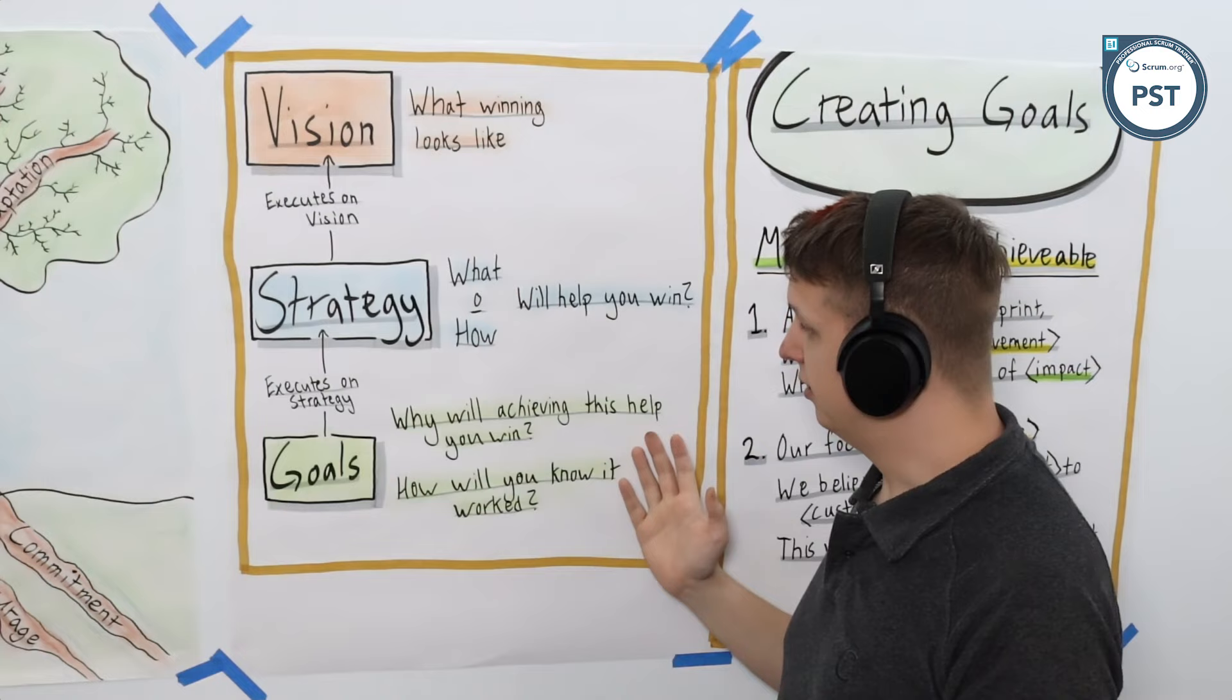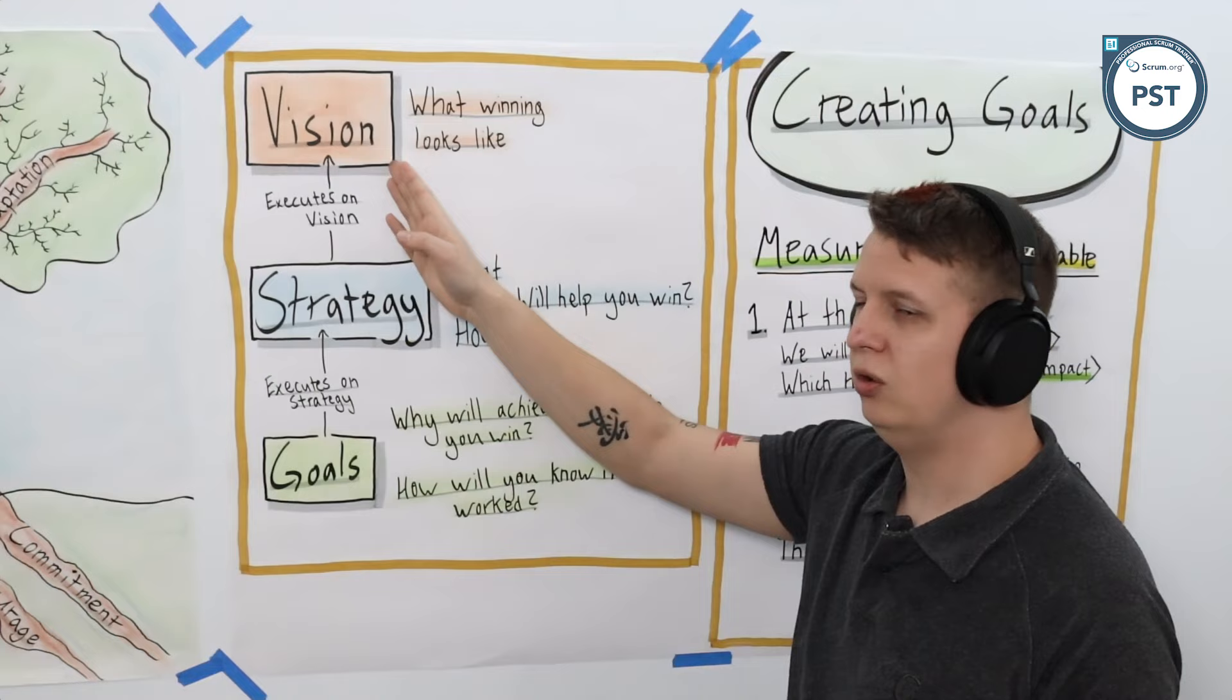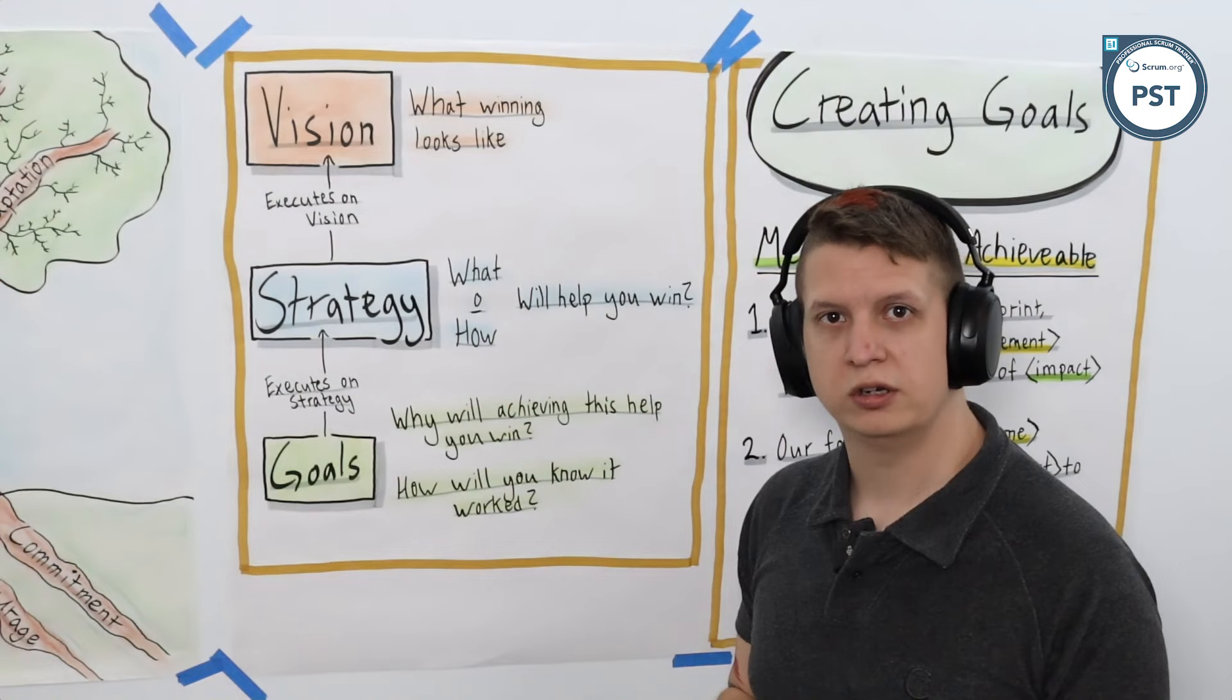The goals then are the things that execute on your strategy. They are the things that answer why will achieving this help us win. This goal will help us win by executing on a part of the strategy, which is then executing on getting us closer to the vision.